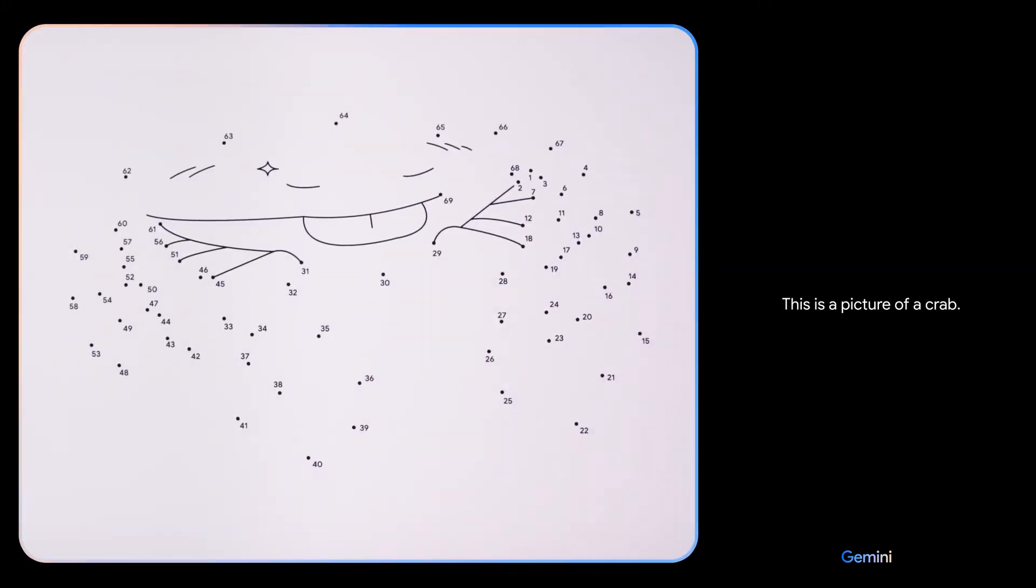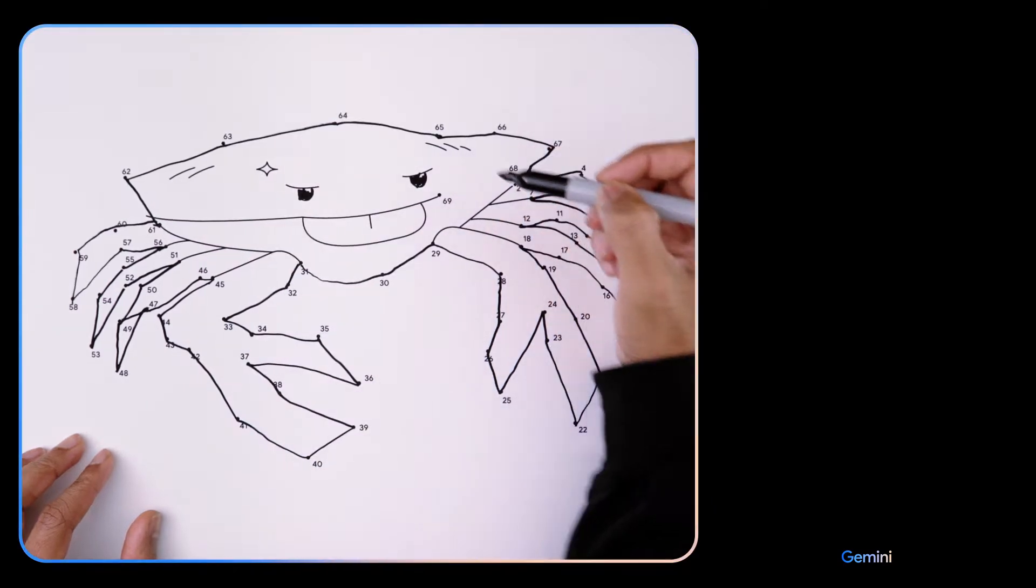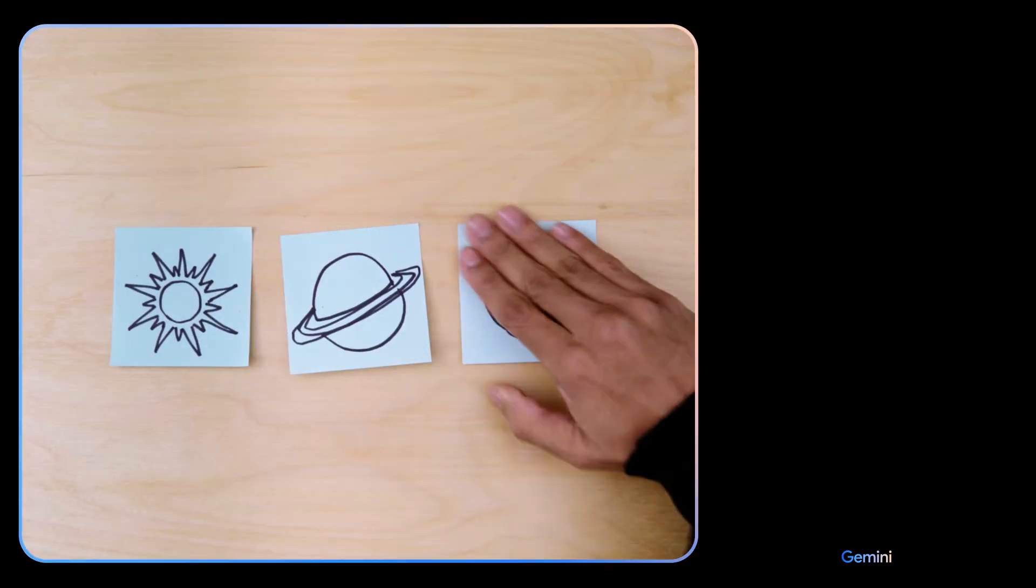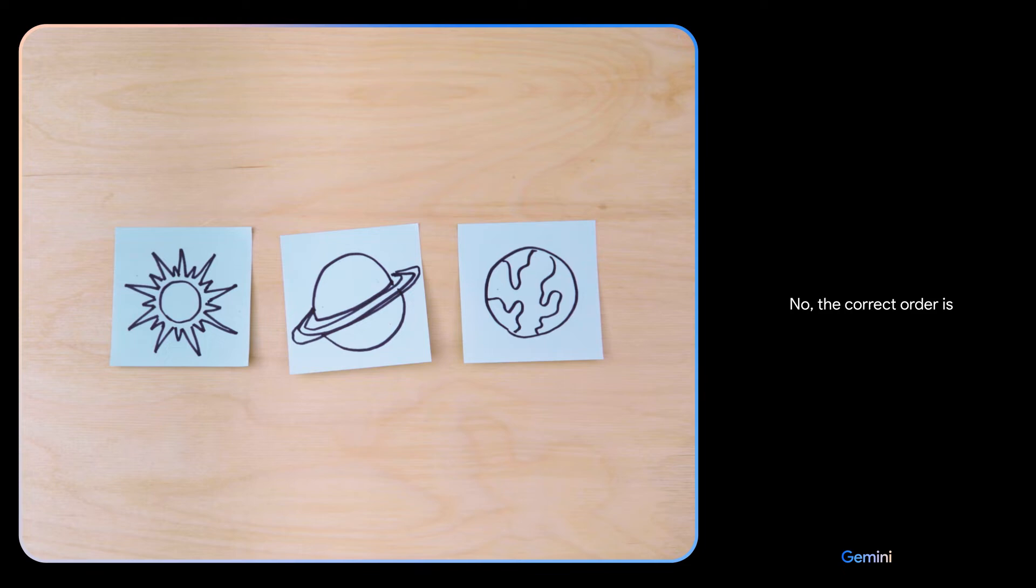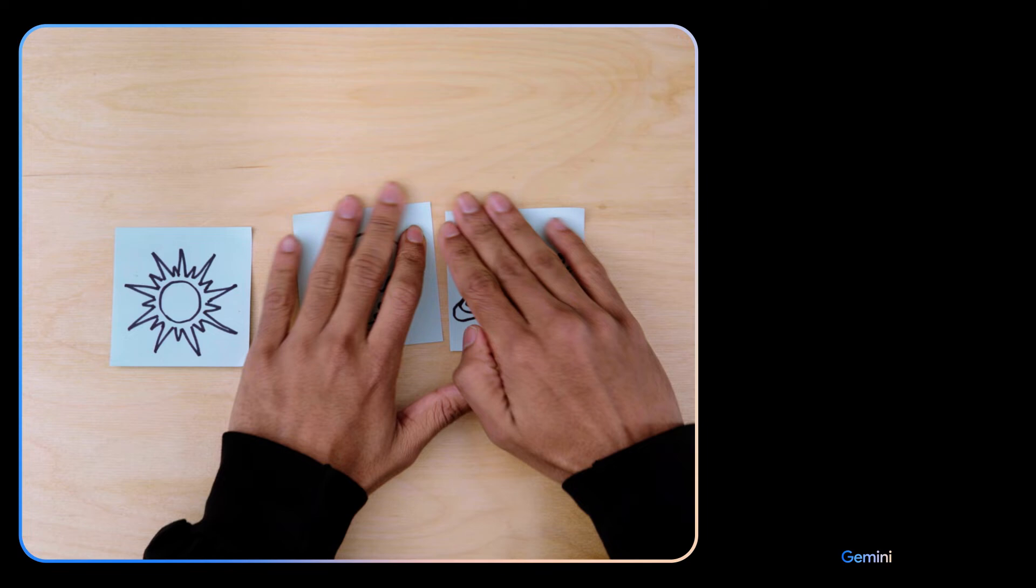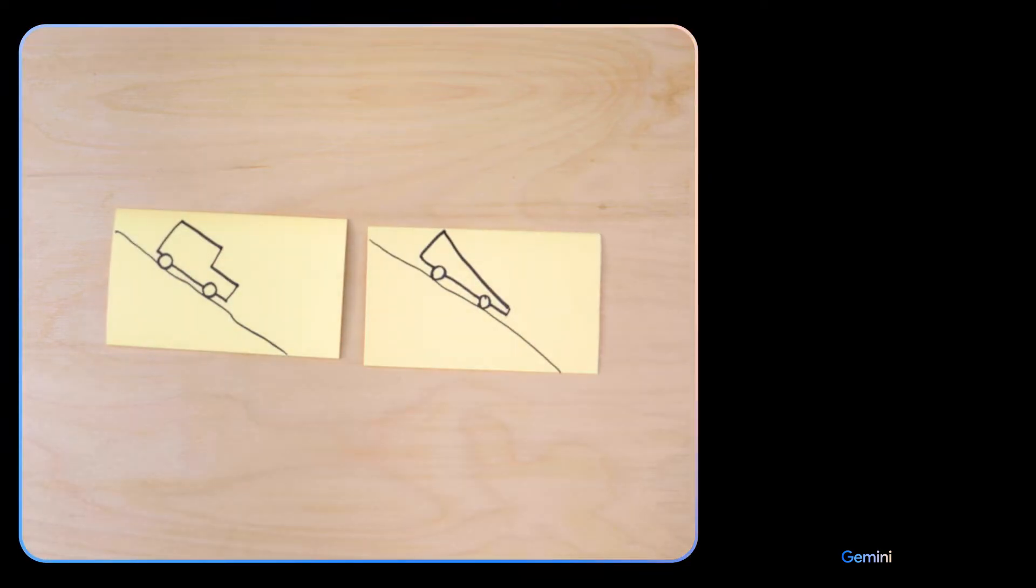Is this the right order? No, the correct order is Sun, Earth, Saturn. Based on their design, which of these would go faster? The car on the right would be faster. It is more aerodynamic.